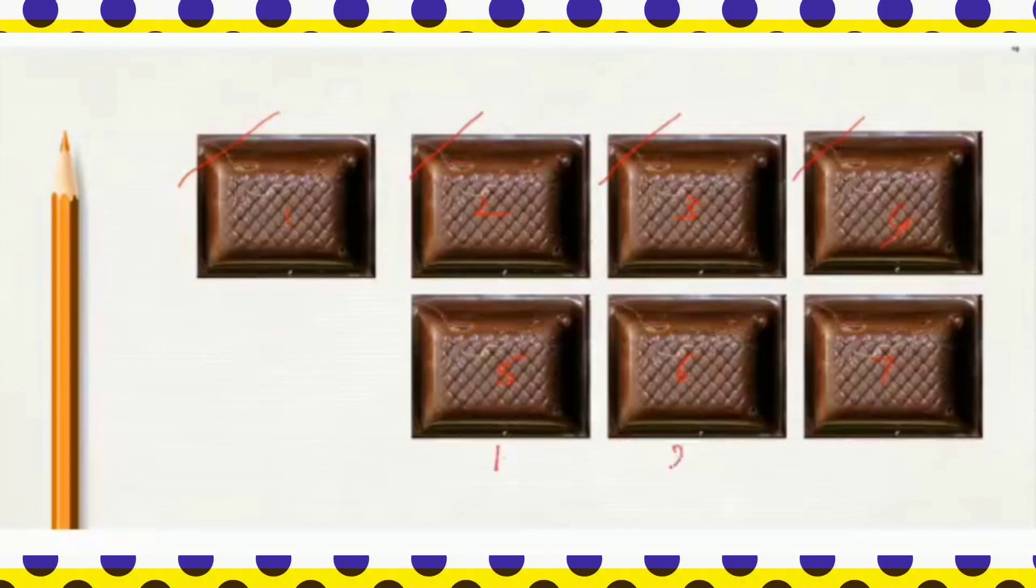1, 2, 3. So, what is the subtraction fact for this? 7 minus 4 equals how many? Out of 7 chocolates, I ate 4. So, how many are remaining? 3. And 3 is the difference of 7 minus 4.